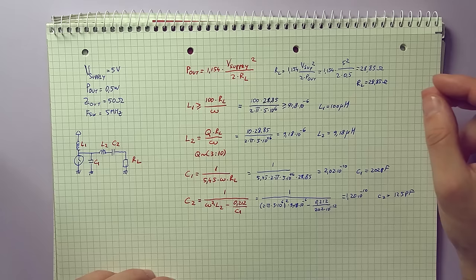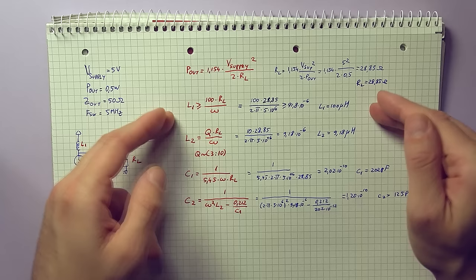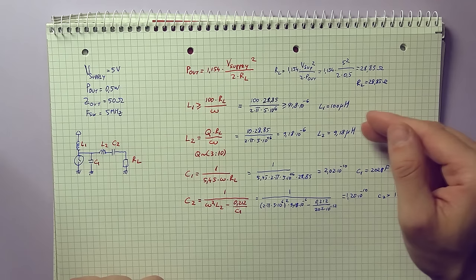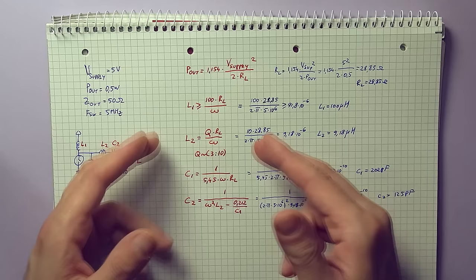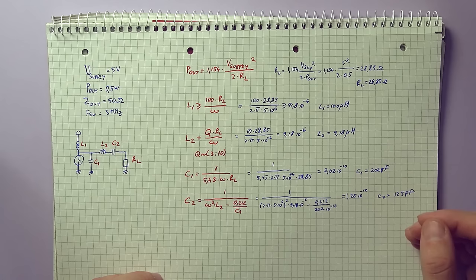So first, we need to determine the load into which we can drive the necessary power. This is not really the load that we want, so we will need some impedance matching later on. Next, your radio frequency choke, your buffer inductor, needs to be relatively large, so a minimum value can be determined, but I will use a standard 100 microhenry inductor just to be on the safe side. And then, for the next calculation, you need to establish a Q factor for the resonance circuit, so typical values will be somewhere between 3 and 10, I will be going with a value of 10, and while using this, the other elements of the resonance circuit can be determined.